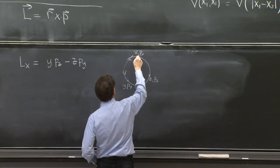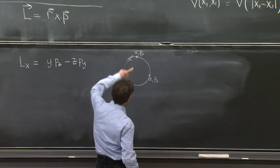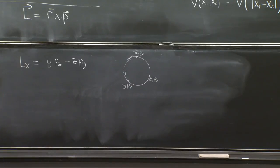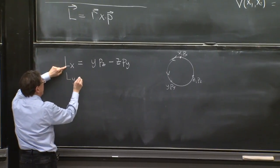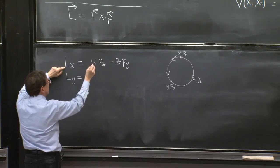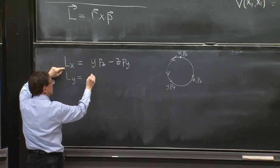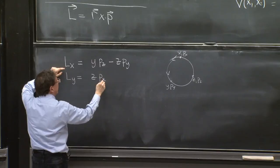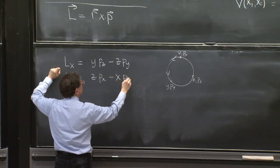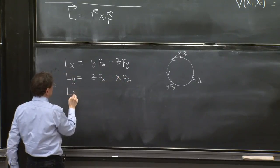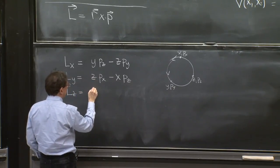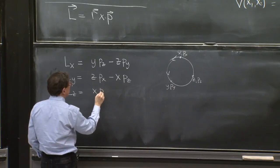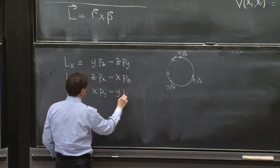Things are cyclically symmetric. There's no real difference between this coordinate. So you can go cyclically here. Let's go cyclic on this index. Ly is equal to z px minus x pz. And Lz is equal to x py minus y px.